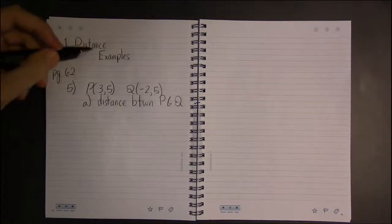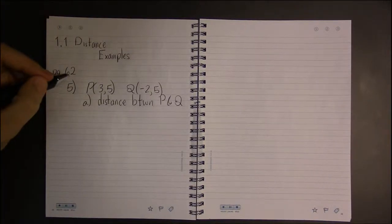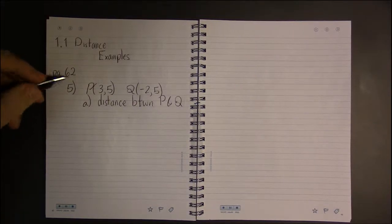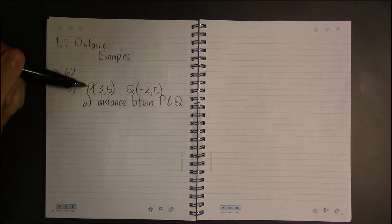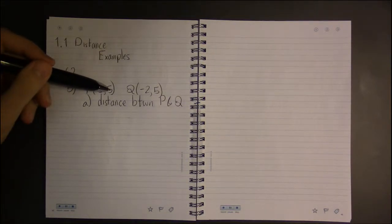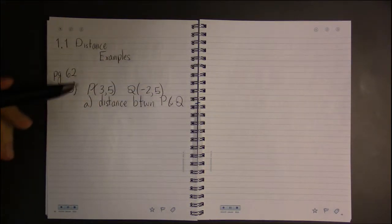Let's look at some more examples of distance. I'm in section 1.1 on page 62 looking at problem five where we're given two points: the point (3, 5) and the point (-2, 5).